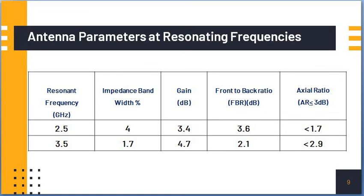These are the antenna parameters at resonant frequency. At resonant frequency 2.5 GHz, the impedance bandwidth percentage is 4, gain is 3.4 dB, front to back ratio is 3.6 dB, and axial ratio for the lower band is less than 1.7 dB.